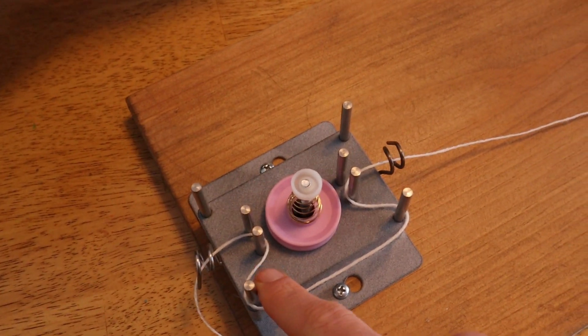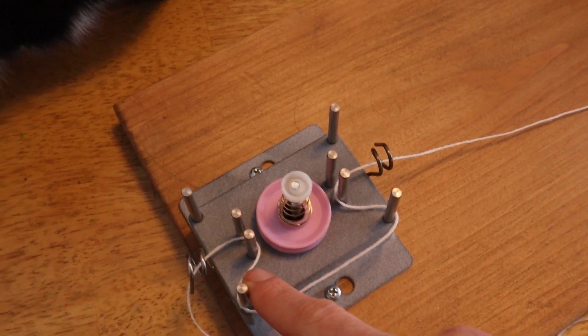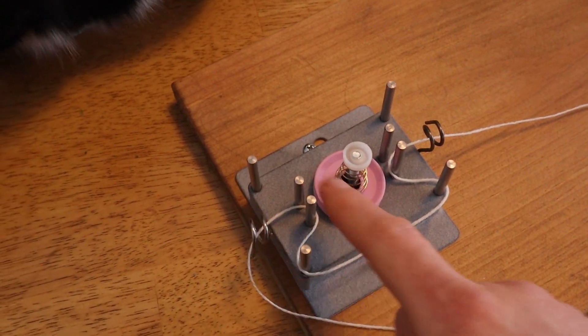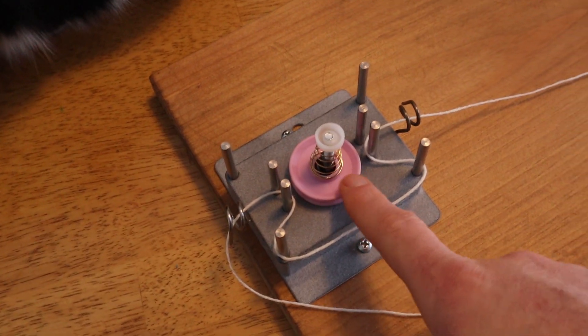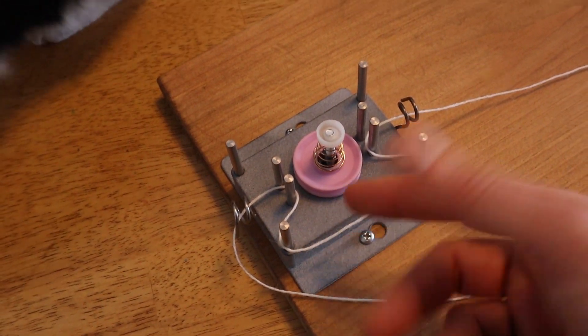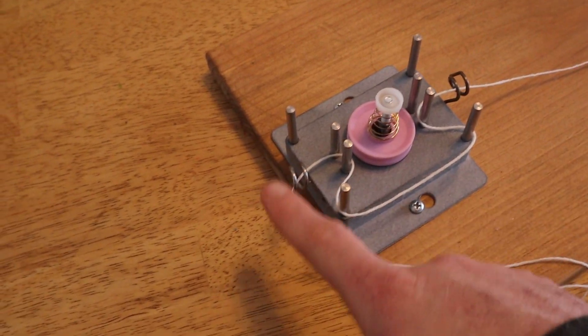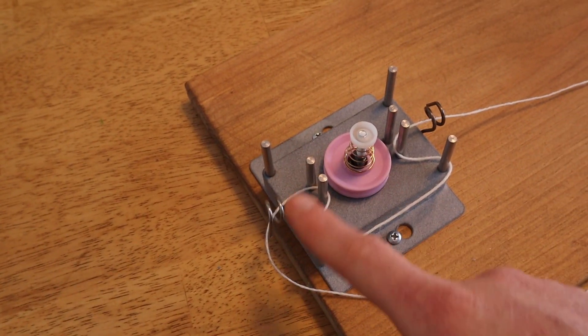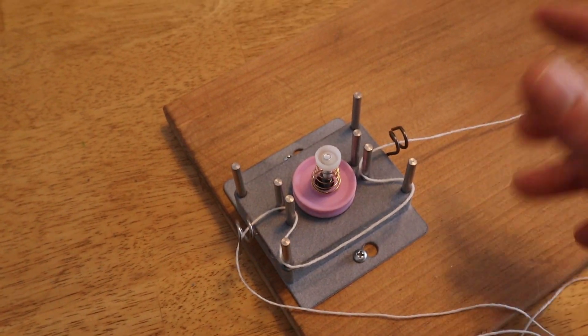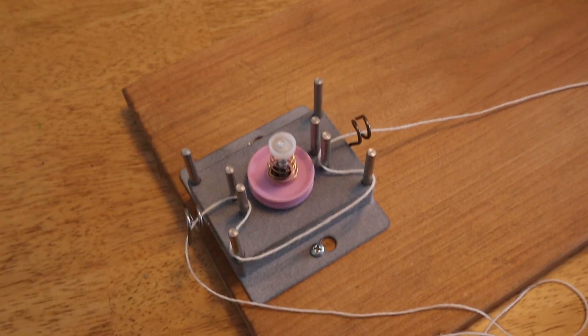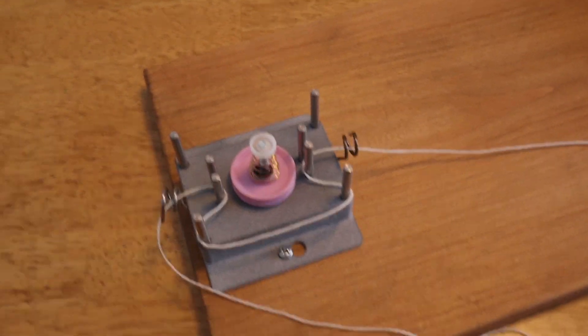Then this is the latest version of my tensioner. I found that this central tension disc isn't really very useful. I'm still considering whether to include it or not, but the metal peg system I've extended and added some extra metal pegs, and it really works well for a wide variety of yarns at this point.